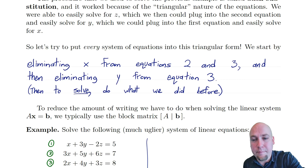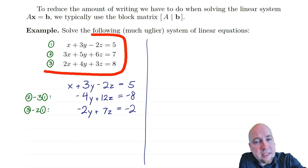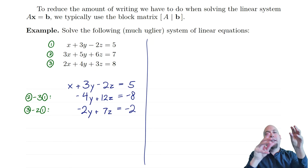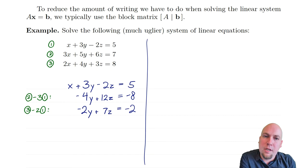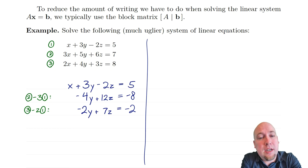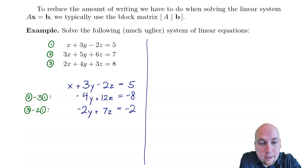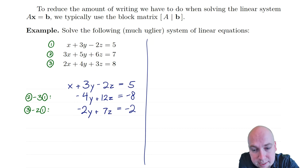Let's go through an example. Starting with a linear system, I'll label the equations one, two, and three. The first thing I want to do is eliminate x from equations two and three — get rid of the 3x and the 2x. One way to do that is to add a carefully chosen multiple of the top equation to the other two equations. If I take the second equation and subtract three times equation one from it, the 3x here cancels with the minus 3x, and I get a zero there. I write this as equation 2 minus 3 times equation 1.